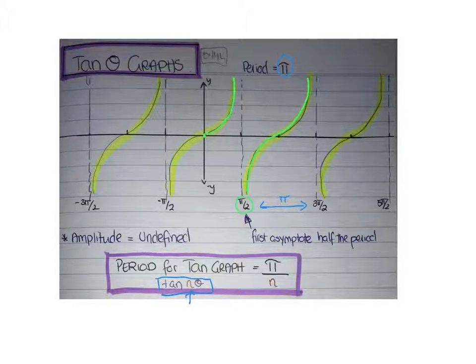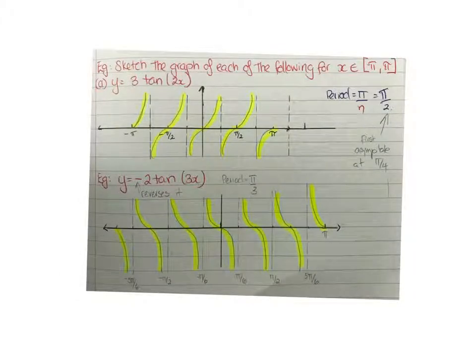The first asymptote occurs at half the period, so you can see this one's at π/2, and then you add a period to that to get the next asymptote. For a tan graph, the amplitude is undefined because you can see it asymptotes up. If we have a look at these graphs here...